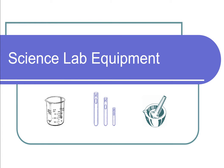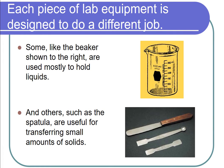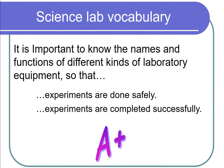Welcome to science lab equipment, part one: equipment used for containing and dispensing chemicals. Each piece of lab equipment is designed to do a different job. Some, like the beaker shown to the right, are used mostly to hold liquids, and others such as the spatula are useful for transferring small amounts of solids. It is important to know the names and functions of different kinds of laboratory equipment so that experiments are done safely and successfully.